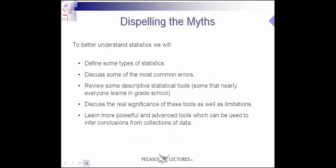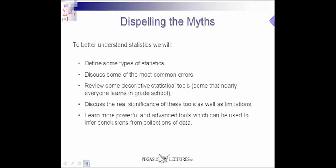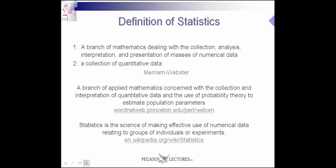So, let's work a little bit on dispelling the myths. To better understand statistics, we will define some types of statistics. So, the first thing is we have to know a definition. What does statistics really mean? We'll discuss some of the most common errors. Then we'll review some descriptive statistical tools, and some that you've actually learned very early on in school. You see that term descriptive, like describe. And then, we're going to discuss the real significance of these tools as well as the limitations. Then we're going to learn more powerful and advanced tools which can be used to infer conclusions from collections of data. And you'll see these terms come up over and over again. Descriptive, they have to describe the data, what the data actually looks like, versus inference, which means to extrapolate, to take that data and to project it out into what it actually means. So, there's two real aspects to it, descriptive and inferential.